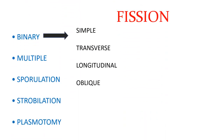Fission is the division of the parent body into two or more identical daughter individuals. Five types of fission are seen: binary fission, multiple fission, sporulation, strobilation, and plasmatomy.